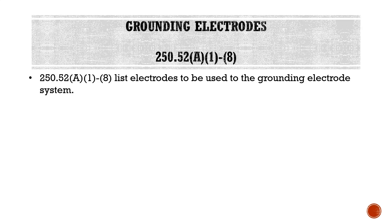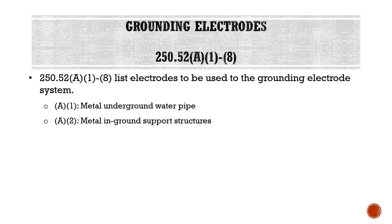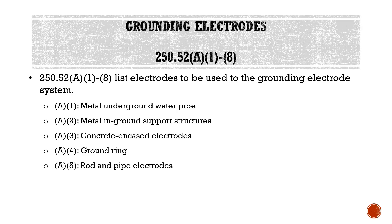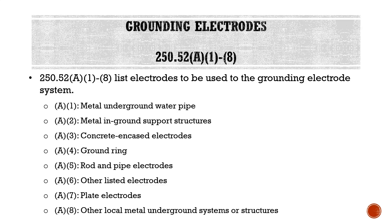Looking at 250.52 A1 through A8 for our grounding electrodes: A1 is metal underground water pipe. A2 is metal in-ground support structures. A3, concrete encased electrodes. A4, a ground ring. A5, rod and pipe electrodes. A6, other listed electrodes. A7, plate electrodes. And A8, other local metal underground systems or structures.